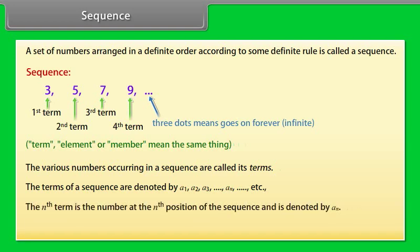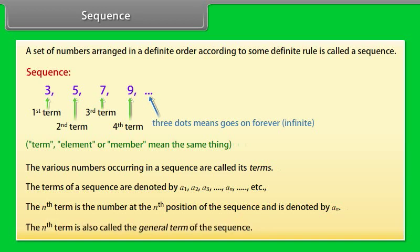The nth term is the number at the nth position of the sequence and is denoted by a1, a2, a3, till an, etc. The nth term is also called the general term of the sequence.